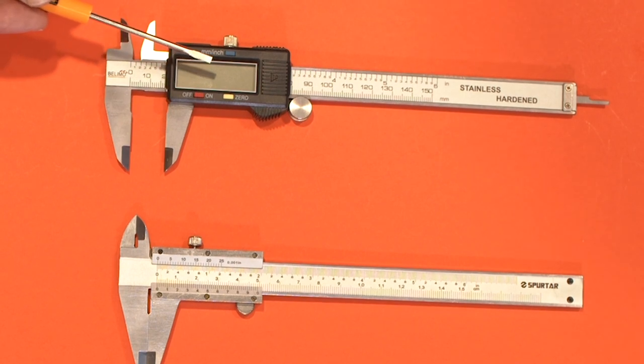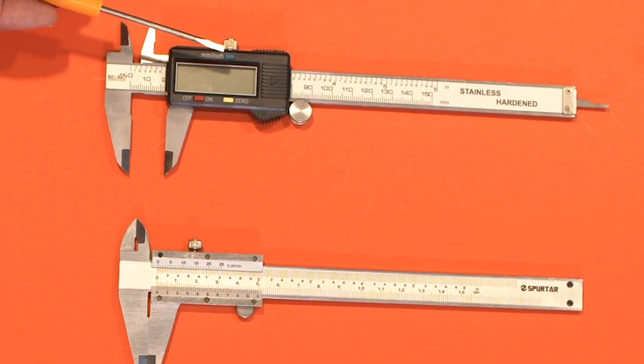For under $50 today, you can get a pretty accurate set of calipers. We require that when you submit the measurements, that you're accurate to within three decimal places if you're using inches, and that you're accurate to within two decimal places if you're using millimeters.